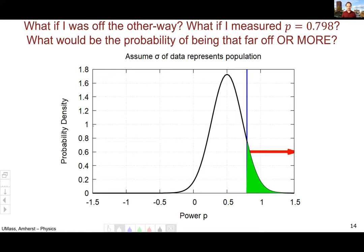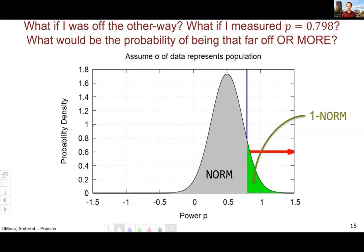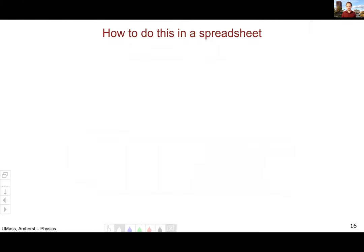Well, there's one issue. The norm function that we used here in our spreadsheet to get the probability, norm.dist always sums from negative infinity all the way up. So if we want the green area, which is 0.798 or higher, we'll have to do one minus. Because remember, this is a probability distribution. So the area under the whole thing has to be one. So if we want the green area, we can calculate the gray area using norm.dist and then subtract it from one to get the green area that we're interested in.